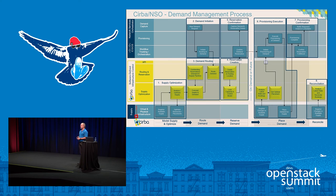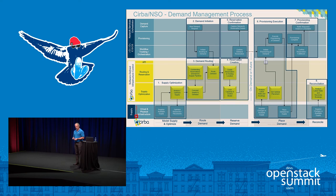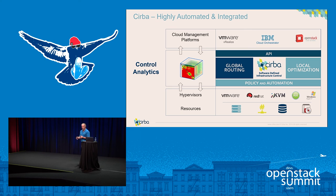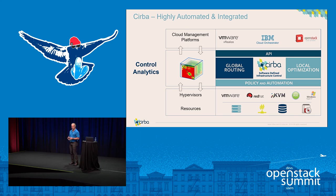This is a high-level description of how we work — the products and names can change. We've seen other ones where it might be vRealize Automation or IBM Cloud Orchestrator, but the process is very similar. From a high level, we're highly automated and integrated, sitting as the control brain between cloud management platforms — OpenStack, vRealize, or ICO. We have an API that talks to those functions and does global routing and local optimization. Through policy and automation, we're talking to various hypervisors — KVM, VMware, Hyper-V, or PowerVM — and reserving and locking capacity for compute, storage, and software.